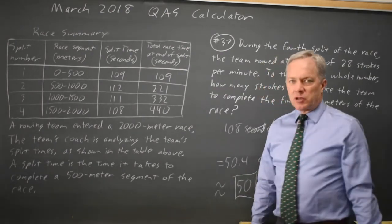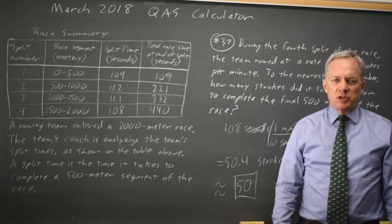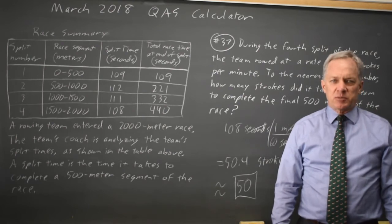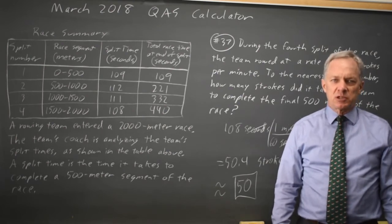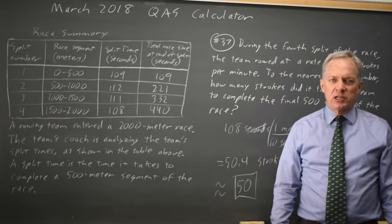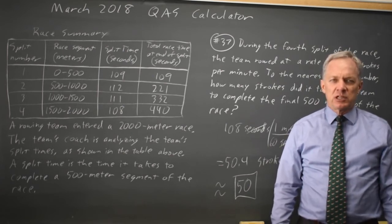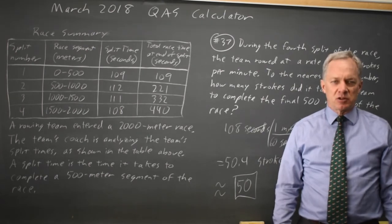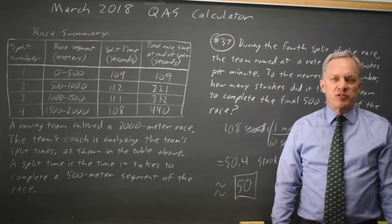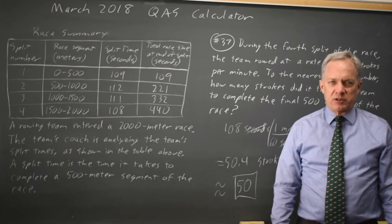With College Board especially — with all math questions — it's important to read the question carefully and make sure your answer answers their question. If I'd entered 50.4, that would be wrong because they said the nearest whole number. By rounding it to 50, I'll get this question right.